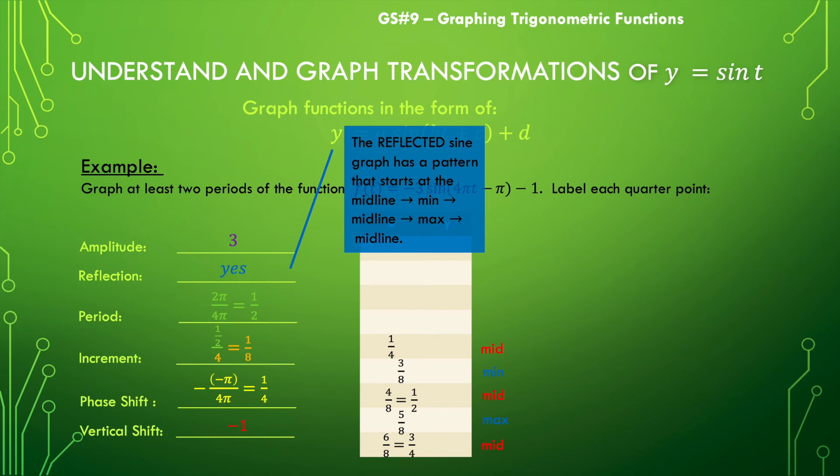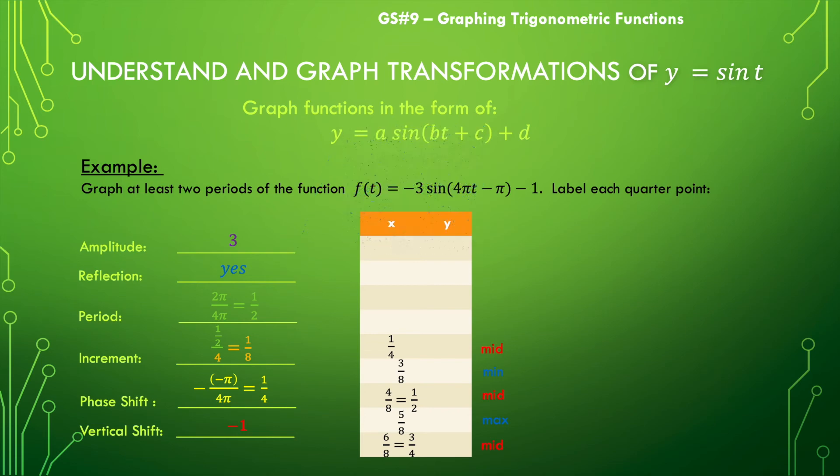Because we have a reflection, we go to the minimum before we go to the maximum. We fill in our midlines all with negative 1, then use our amplitude and add and subtract from the vertical shift to get our maximum and minimum. Negative 1 minus 3 will be negative 4, and negative 1 plus 3 will give us positive 2.